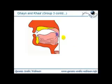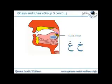The next two letters in group three are the top of the throat letters: Ghayn and Kha. You'll notice that your tongue doesn't actually touch the back of the top of your mouth; it's really a sound taking place right at the top of your throat.